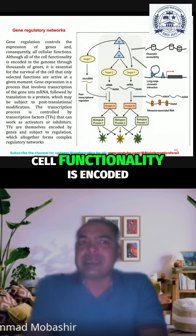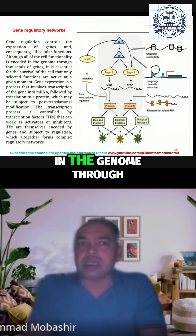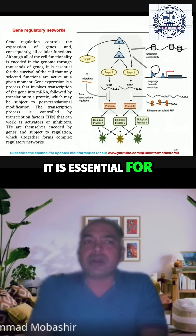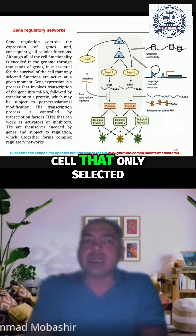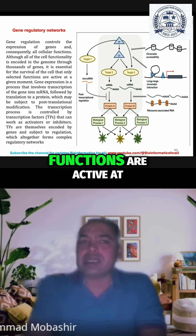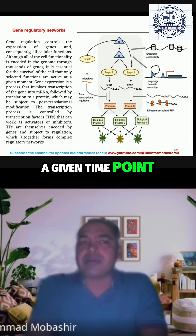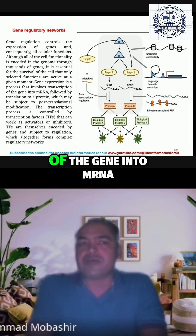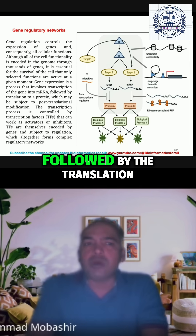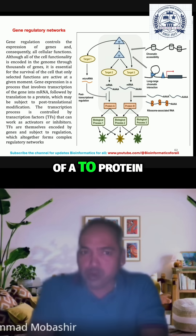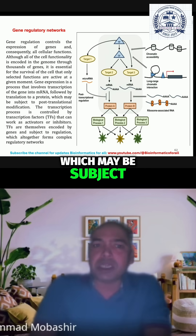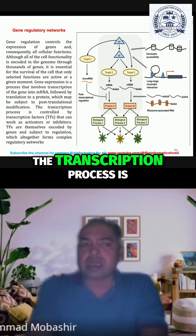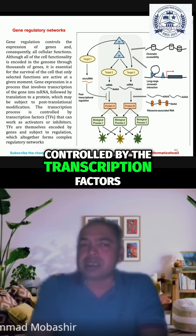Although all of the cell functionality is encoded in the genome through thousands of genes, it is essential for the survival of the cell that only selected functions are active at a given time point. Gene expression is the process that involves transcription of the gene into mRNA, followed by the translation into a protein, which may be subject to post-translational modification. The transcription process is controlled by the transcription factors,